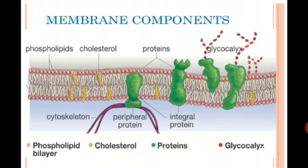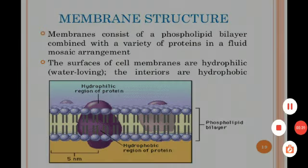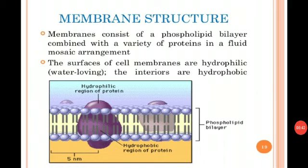The most acceptable model for the structure of the plasma membrane is the fluid mosaic model. According to this model, membranes consist of a phospholipid bilayer combined with a variety of proteins in a fluid mosaic arrangement. The surface of the cell membrane is hydrophilic, while the interior is hydrophobic and does not face the extracellular fluid. This is the most widely accepted model for the structure of the plasma membrane.